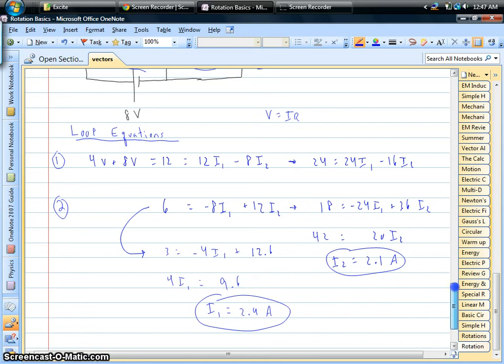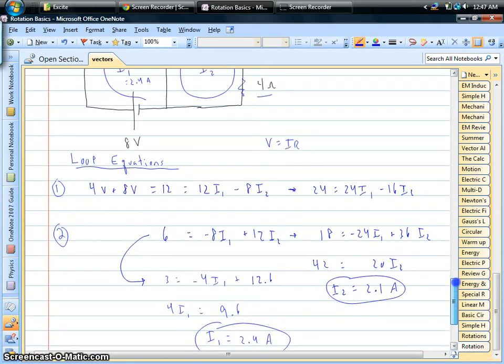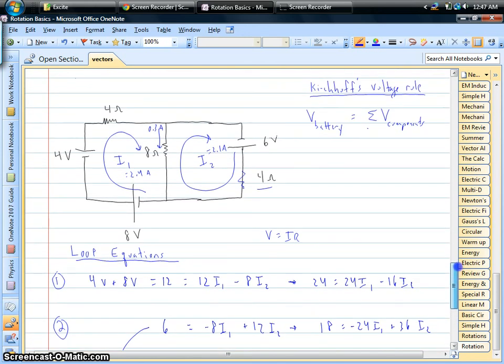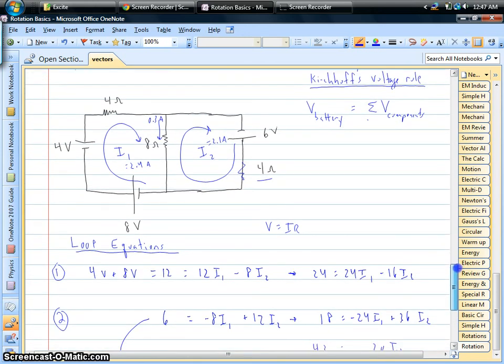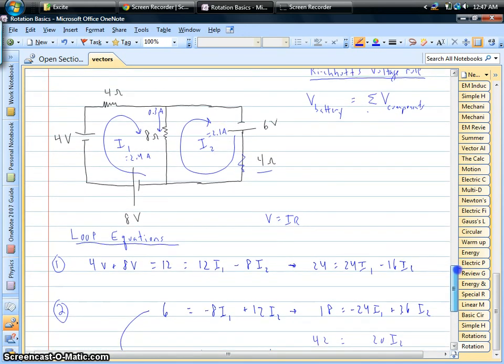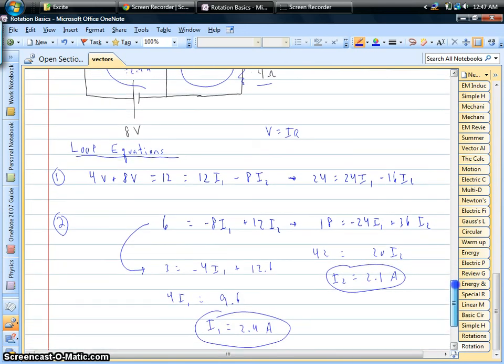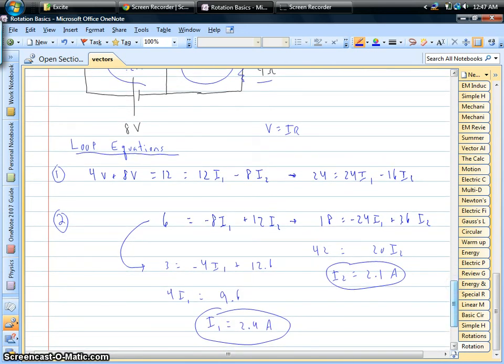So I hope this helps. It's just a nice little trick using Kirchhoff's voltage rule. You write down the two loop equations based on your guesses for the direction of the currents, and we solve the system, do some algebra, and we can figure out what those currents are. So I hope this helps, and until next time we'll see you later.